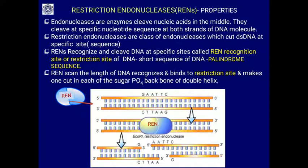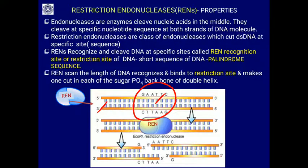Properties of restriction endonucleases: they cleave nucleic acids in the middle, not from the ends — that is why they are called endonucleases. They cleave at specific nucleotide sequences at both ends of the DNA molecule. Restriction endonucleases are a class of endonucleases that cut double-strand DNA at a specific site called the restriction site or recognition site. This site is a short sequence of four to six bases called a palindrome sequence.